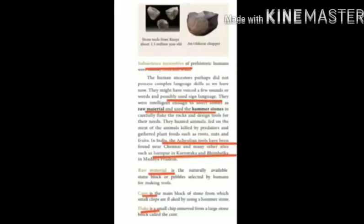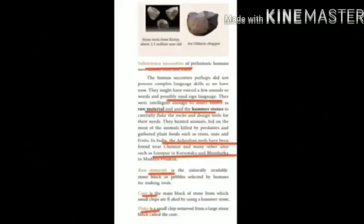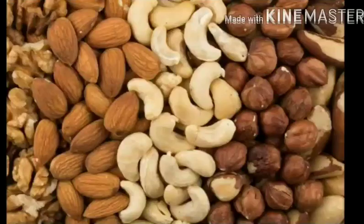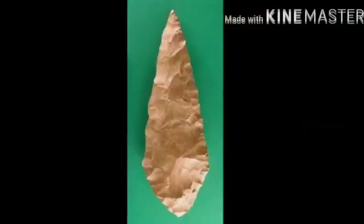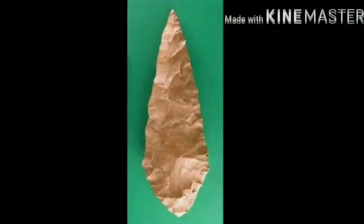They voiced a few sounds or words and possibly used sign language. They were intelligent enough to select stones as raw material and used the hammerstone to carefully flake the rocks and design tools for their needs. They hunted animals, fed on the meat of animals killed by predators, and gathered plant foods such as roots, nuts and fruits. In India, the Achulian tools have been found near Chennai and many other sites such as Isambur in Karnataka and Bhimbetka in Madhya Pradesh.